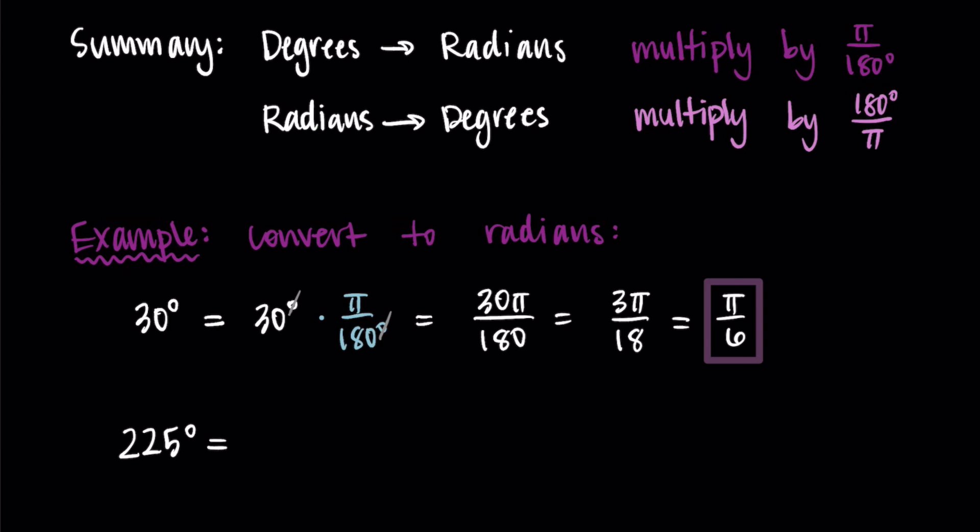All right, let's try it with 225. If you didn't try this yet, pause and try it out, but I'm going to go through it. So let's start with our 225 degrees, and I'm going to multiply by π over 180 degrees. Then my degrees are canceling, and I'm going to write this as one fraction. So I have 225π over 180, and now I just need to simplify.